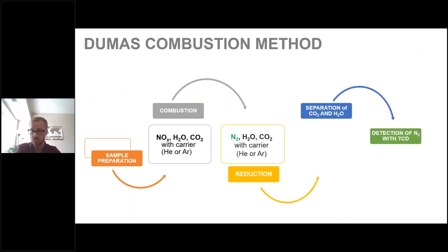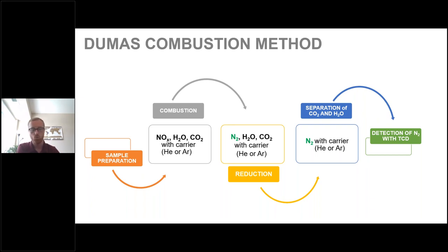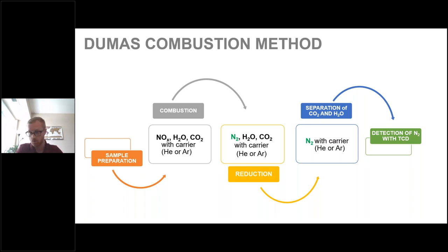The Duma combustion method works as follows: sample preparation is key — samples should be as homogenous as possible for the most repeatable results. The sample then enters the combustion chamber, where it is rapidly combusted into NOx, H₂O, CO₂, and other gases along with the carrier gas (helium or argon). During the reduction phase, NOx is converted into N₂ — the critical step for quantifiable nitrogen. CO₂ and H₂O are then separated, and the nitrogen proceeds to our thermal conductivity detector (TCD), where it is detected and factored out into protein.